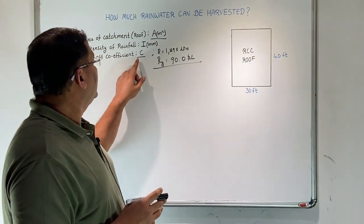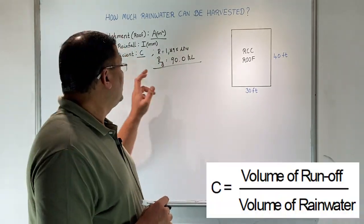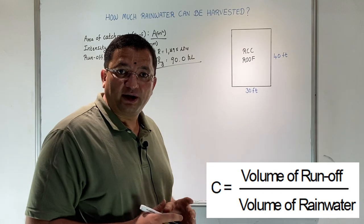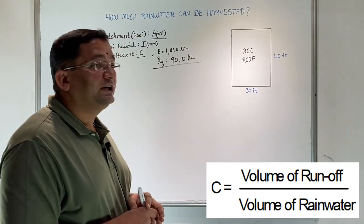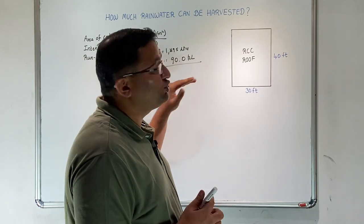In this calculation, the runoff coefficient C is a critical number. For RCC, one can assume it to be 0.85. Depending on the catchment and your ingenuity, you can assume the runoff coefficient.